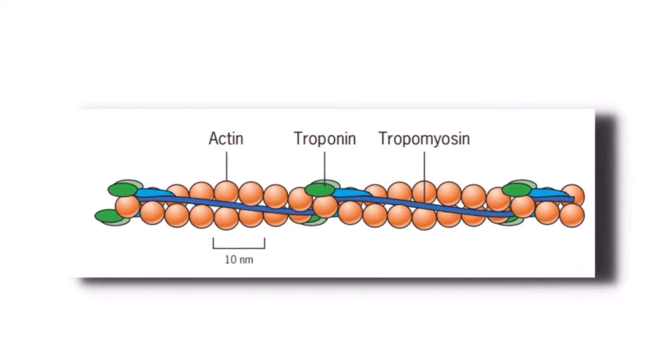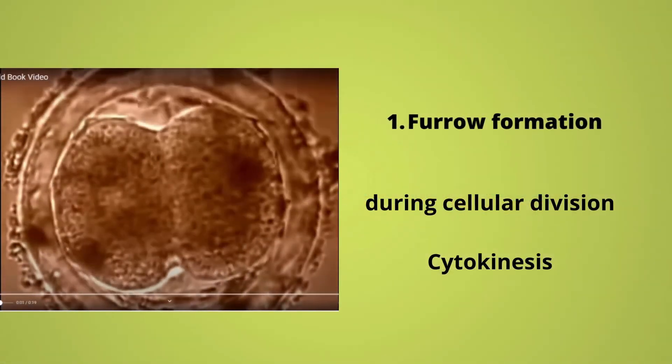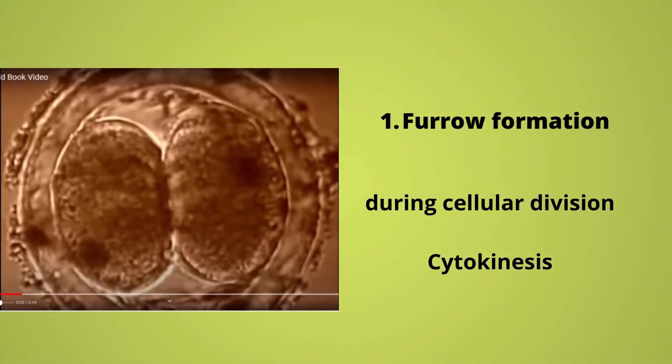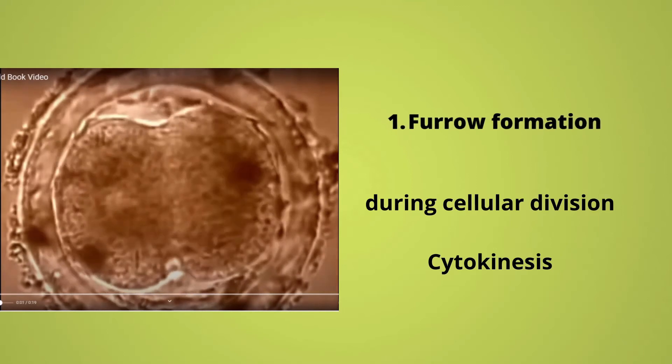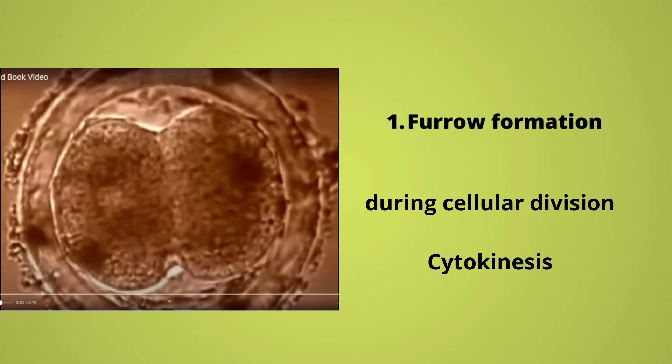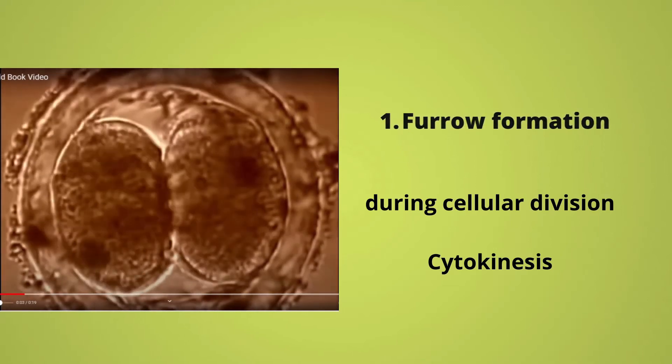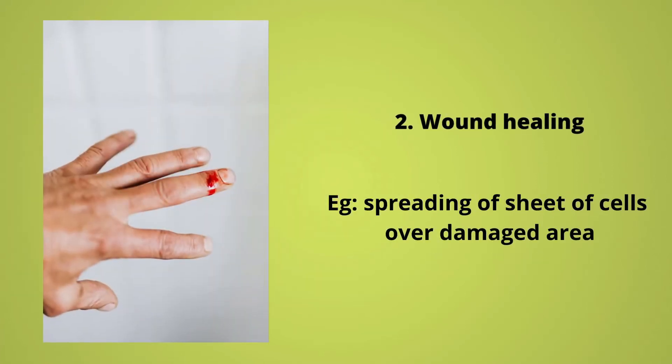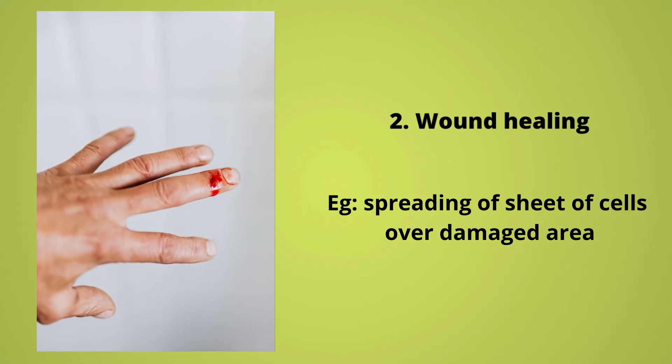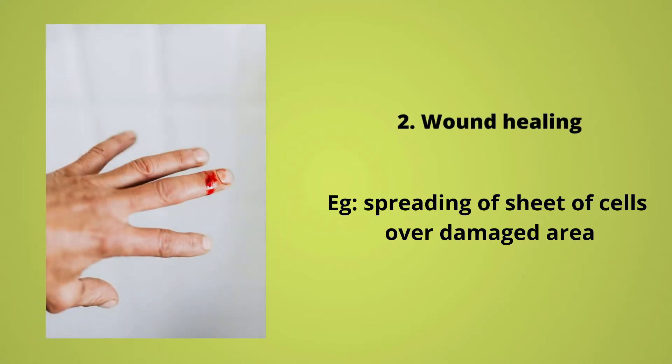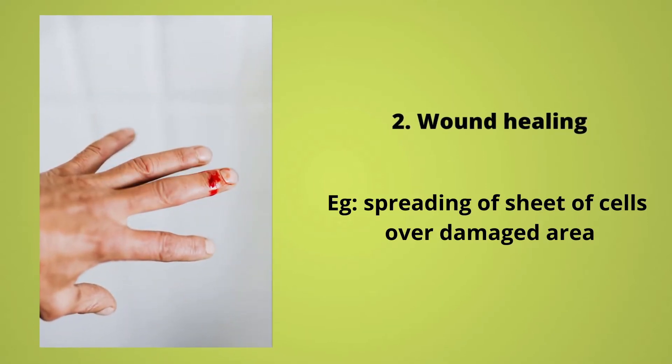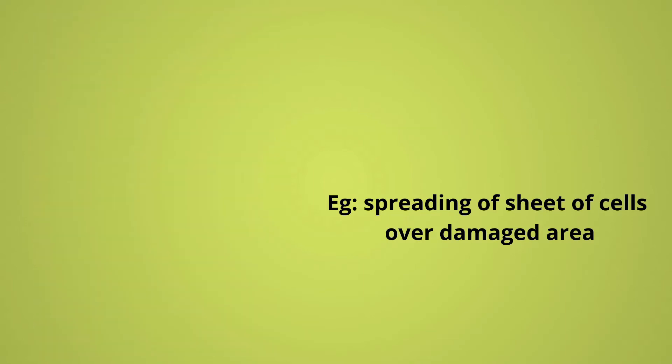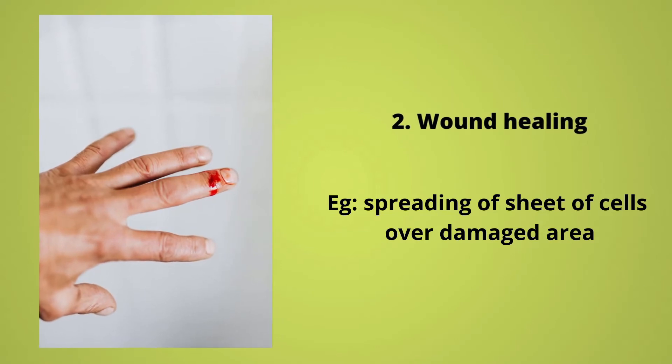Some of these functions include the formation of cleavage furrow during the process of cellular division and more specifically during cytokinesis, the division of the cytoplasm. Microfilaments are also involved in the movement of epithelial cells over a damaged area or injured area in order to replace those damaged cells.